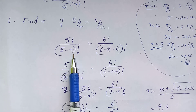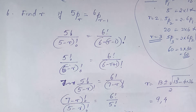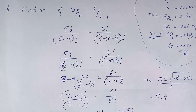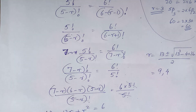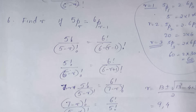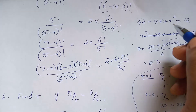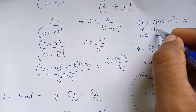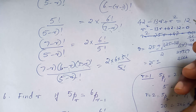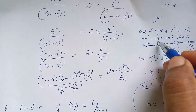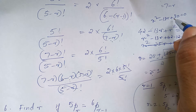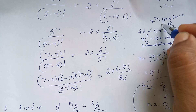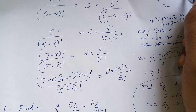So 5 factorial by (5 minus r) factorial equals 6 factorial by (6 minus 1 minus 1). Simplifying: 8 minus 5 by 5 minus 6 factorial equals 6. So minus 10 is 6, minus 13 is 6. We've done that. And now this is the value, and R equals 3.